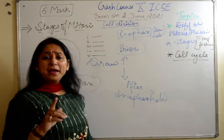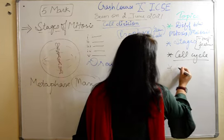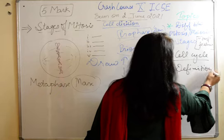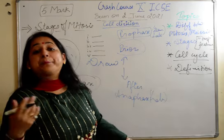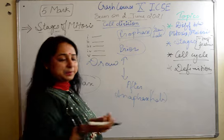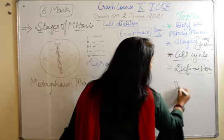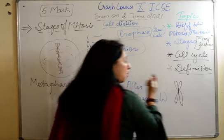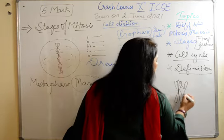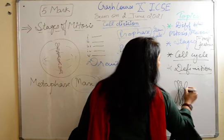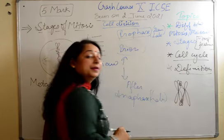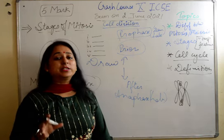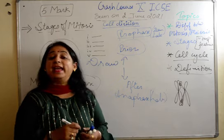After that, we have certain definitions to learn — like synapse and synapsis. Synapse is when neurons are placed together. Synapsis is when chromosomes during crossing over are placed and joined together. These are a few definitions in your book which you cannot miss.